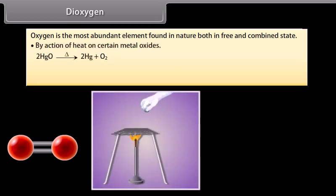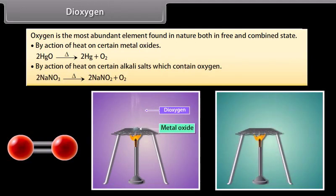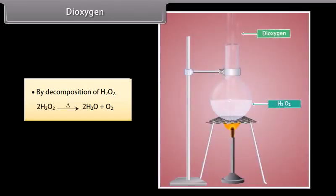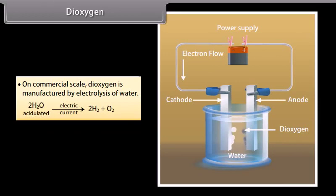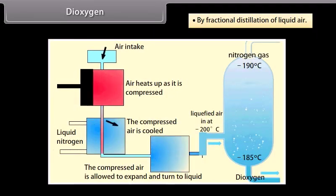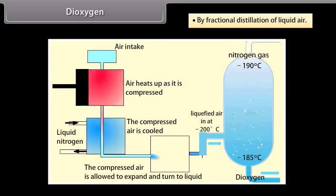By the action of heat on certain metal oxides, by the action of heat on certain alkali salts which contain oxygen, by decomposition of H2O2, on commercial scale dioxygen is manufactured by electrolysis of water, and by fractional distillation of liquid air. When liquid air is distilled, nitrogen with lower boiling point distills out first, leaving behind practically pure dioxygen.